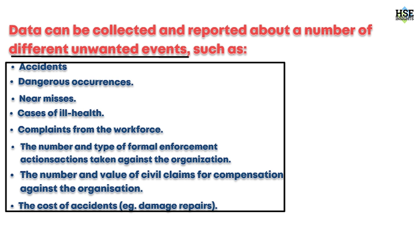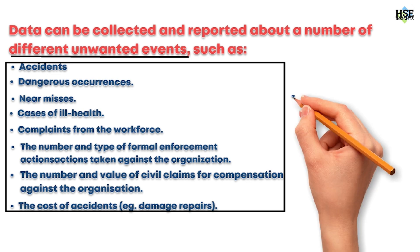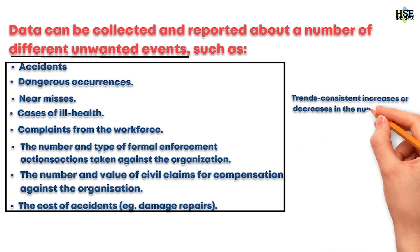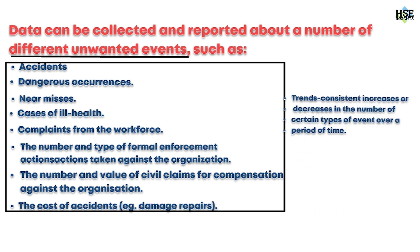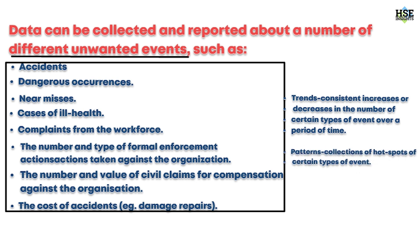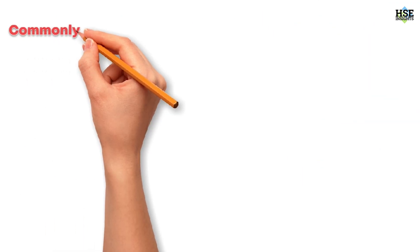This data can then be analyzed to see if there are any trends — consistent increases or decreases in the number of certain types of event over a period of time — or patterns and collections of hot spots of certain types of event. This analysis usually involves converting raw data, i.e. the actual numbers, into an accident rate so that meaningful comparisons can be made.